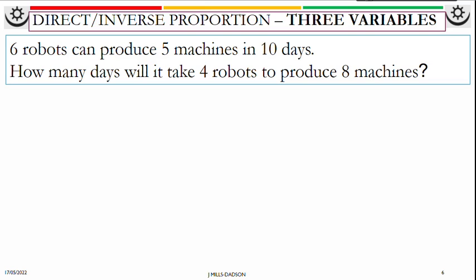What about the combination of direct and inverse proportion? Six robots can produce five machines in ten days. How many days will it take four robots to produce eight machines?